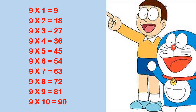Let us revise the table of 9. 9 1s are 9. 9 2s are 18. 9 3s are 27. 9 4s are 36. 9 5s are 45. 9 6s are 54. 9 7s are 63. 9 8s are 72. 9 9s are 81. 9 10s are 90.